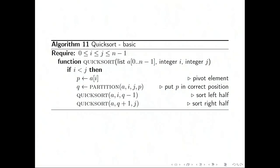We then use this auxiliary partition function which does all the work, which partitions the sublist between elements i and j inclusive, and puts p in its correct position.